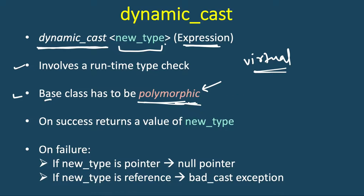Assuming the base class is polymorphic, the cast will either succeed or fail. On success, it will return a pointer or reference of the new type. On failure, if the new type is a pointer it will return a null pointer, and if the new type is a reference it will throw a bad_cast exception, because the base pointer or reference is not holding a valid derived class object.